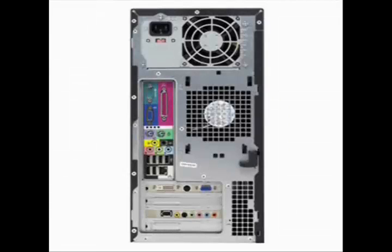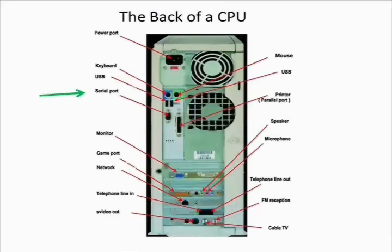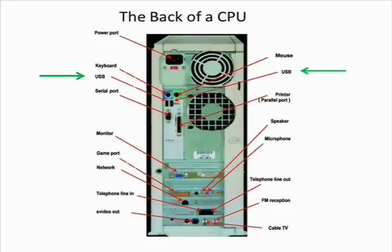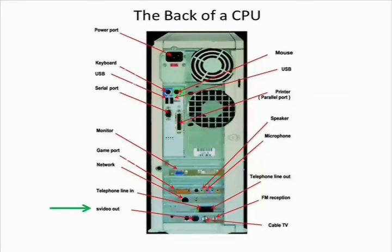Now let's take a look at the back of the CPU, where we find many of the CPU's ports. Here we can see the Serial Port, which is used for connecting the mouse, the keyboard, the monitor, and other devices. These ports here are Universal Serial Bus or USB ports — the newer generation of the Serial Port. USB ports also connect MP3 players and cameras to the computer. Here we can see the Printer Port, which connects the printer to the computer. Another port that may be found on the back of the CPU is the Sony Philips Digital Interface or SPDIF port.